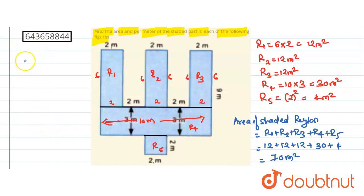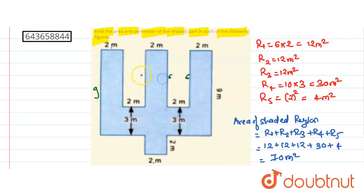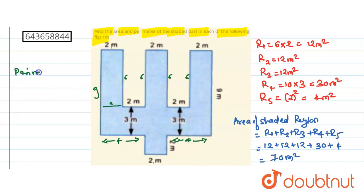Now for the perimeter of the shaded part. This part is 9, this part is also 9. Then 9 minus 3 gives 6, and there are four sides of length 6. There are also sides of length 2, and 2 plus 2 gives 4, so there are two parts of length 4. So 9 plus 9 is 18.